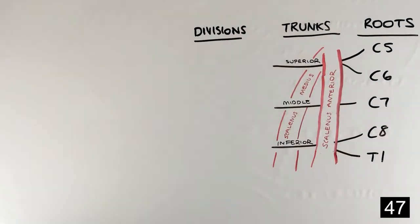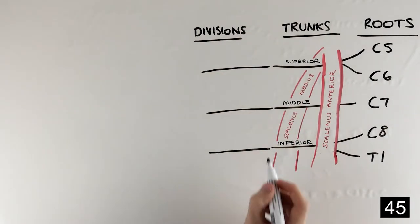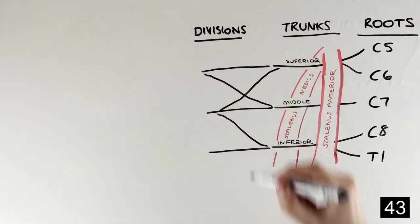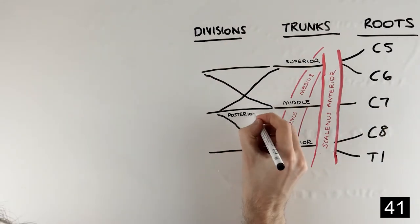We then come to the divisions, and every trunk gives off both an anterior and posterior division. It's easiest to start by combining all the posterior fibers in the middle, and then remembering to take the middle ones upwards.